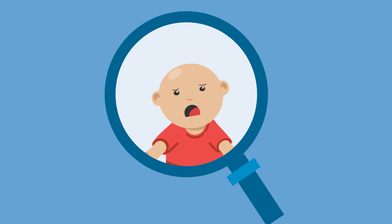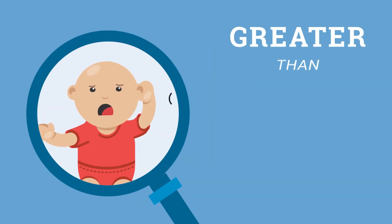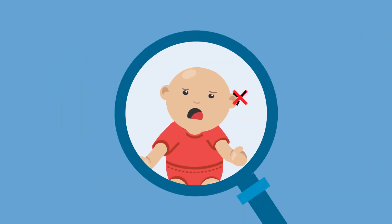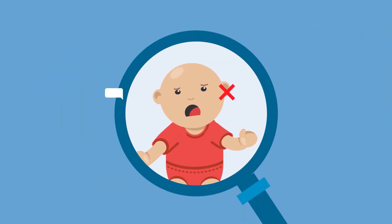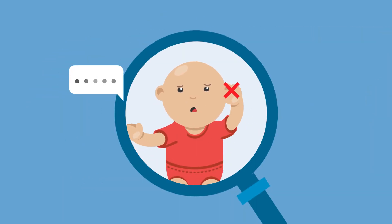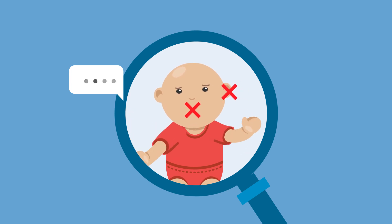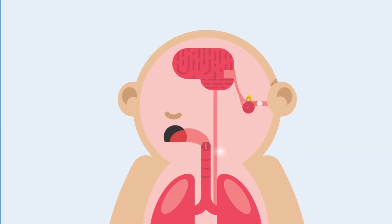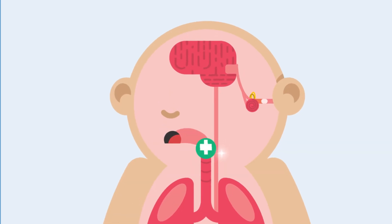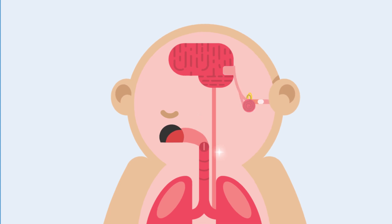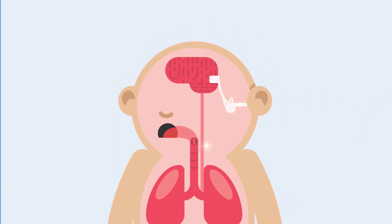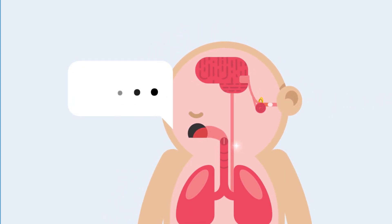Children with profound, greater than 90 decibel hearing loss or total deafness fail to develop speech and have often been termed as deaf and mute or deaf and dumb. However, these children have no defect in their speech-producing apparatus. The main defect is deafness. They have never heard speech and therefore do not develop it.